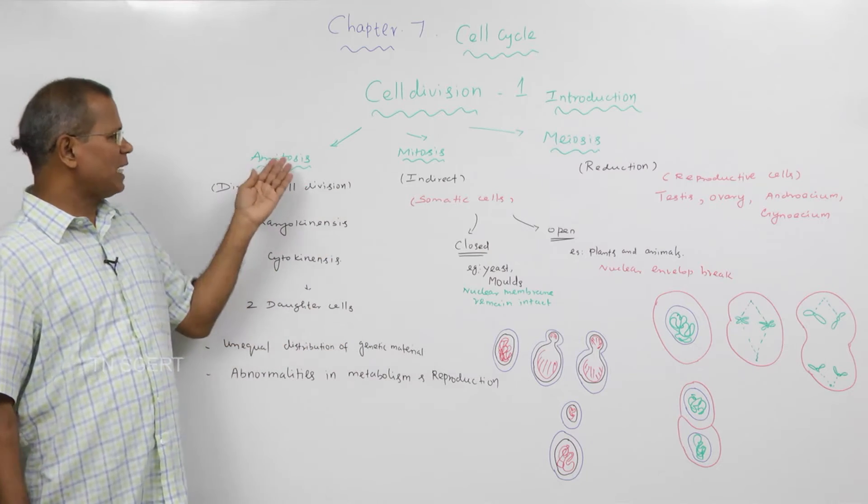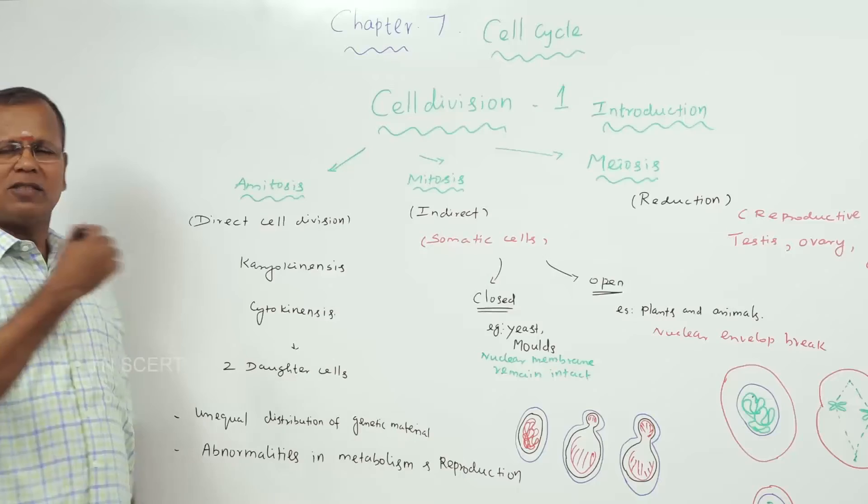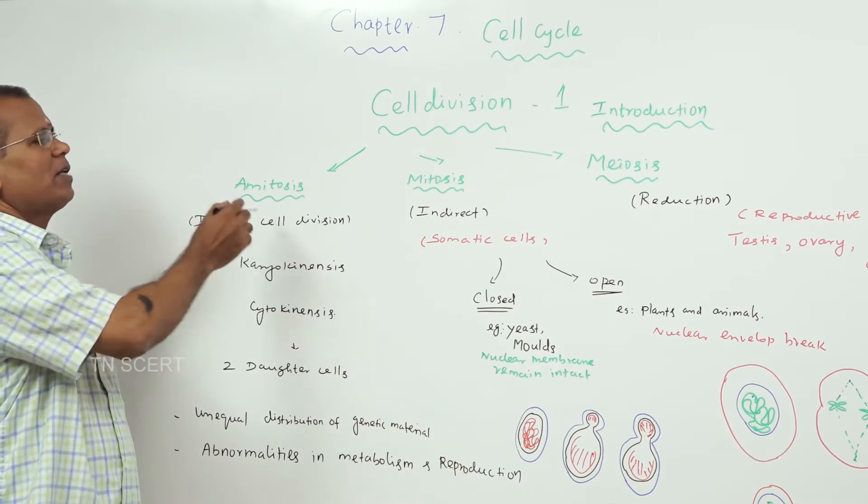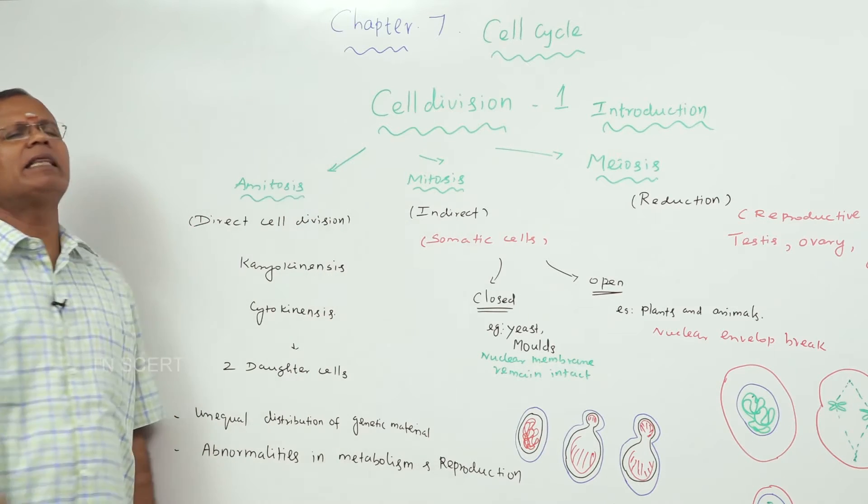Already, we know three types of cell division reported in plants as well as animals, namely, amitosis, mitosis and meiotic cell division.